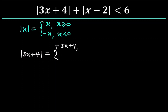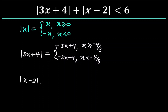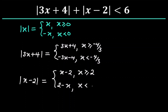3x plus 4 if 3x plus 4 is greater than or equal to zero, or if x is greater than or equal to negative 4 over 3; or negative 3x minus 4 if 3x plus 4 is less than zero, or if x is less than negative 4 over 3. Also, the absolute value of x minus 2 is equal to x minus 2 if x is greater than or equal to 2, or 2 minus x if x is less than 2. This leads to four different cases.